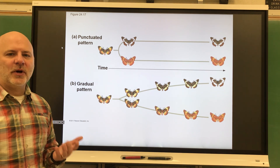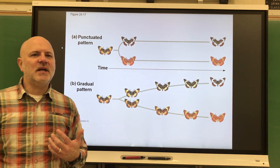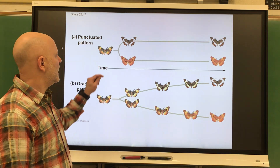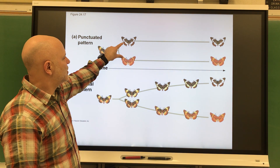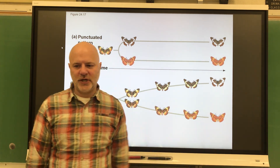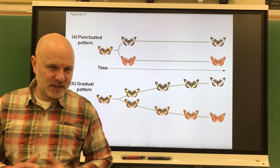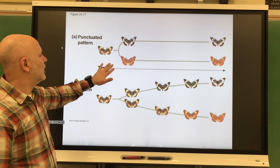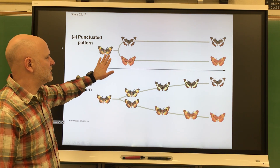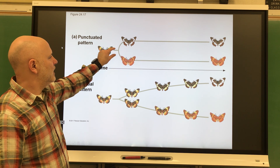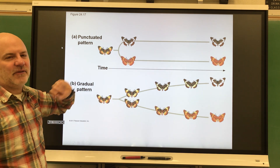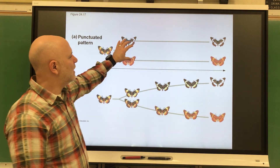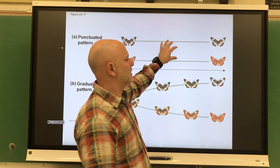There's a different idea called punctuated equilibrium, which states that speciation occurs in spurts followed by long periods of little change. This is in contrast to gradualism. Typically, what happens with punctuated equilibrium is the environment changes very quickly and so organisms have to evolve very quickly to match those changing environments.